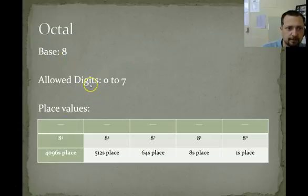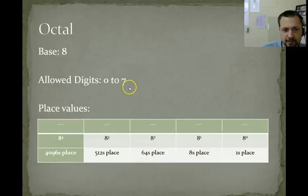Octal. Octal is base 8. The allowed digits are 0 through 7. And then we have some place values. So for our place values, remember it's always the base taken to the power of how far you are from the 1's place. So 8 to the 0 is 1's. 8 to the 1 is the 8's place. 8 to the 2 is the 64's place. 8 to the 3 is the 512's place. And 8 to the 4 is the 4096's place.